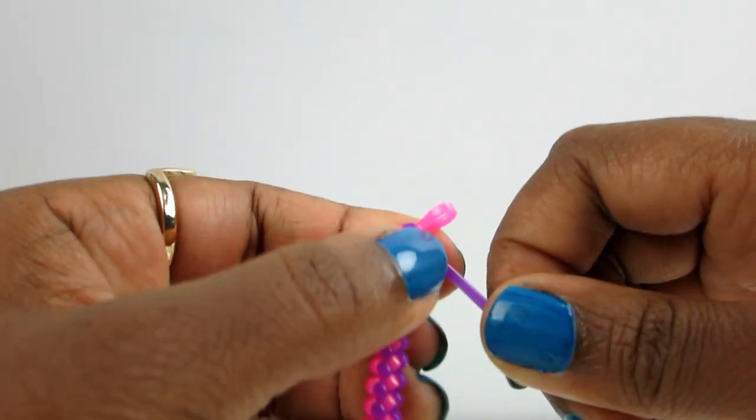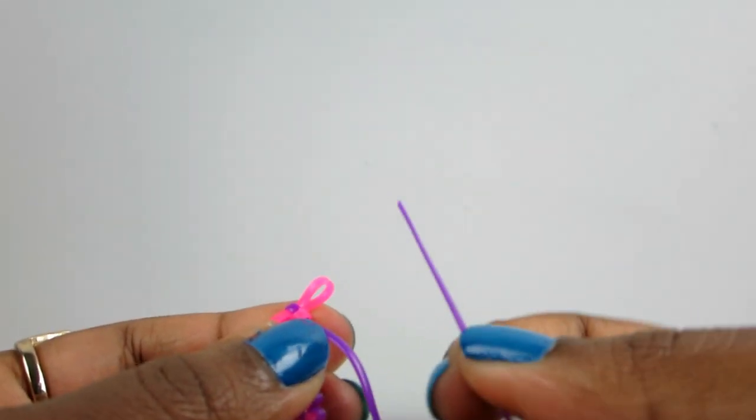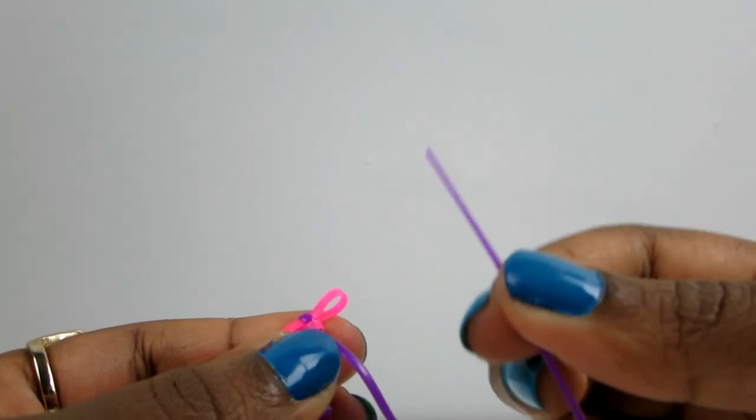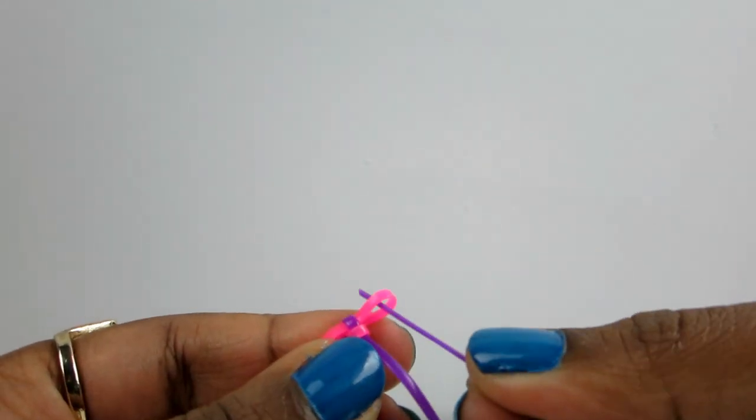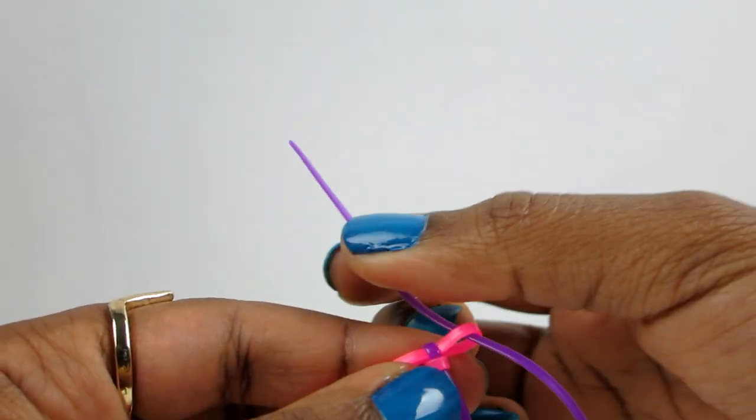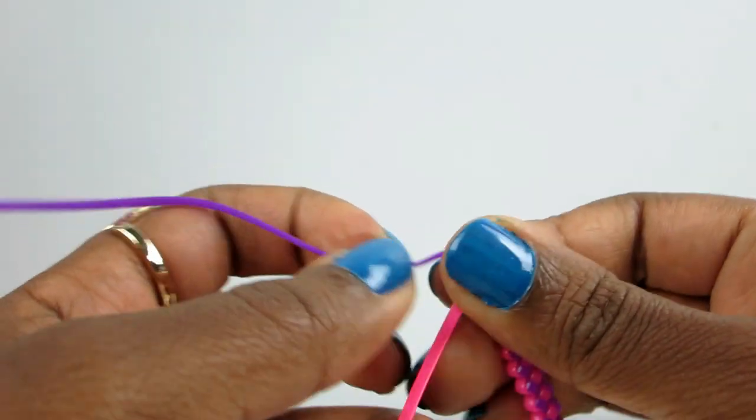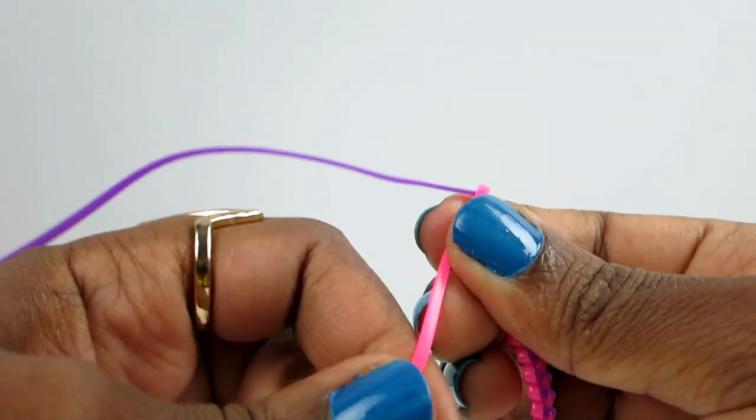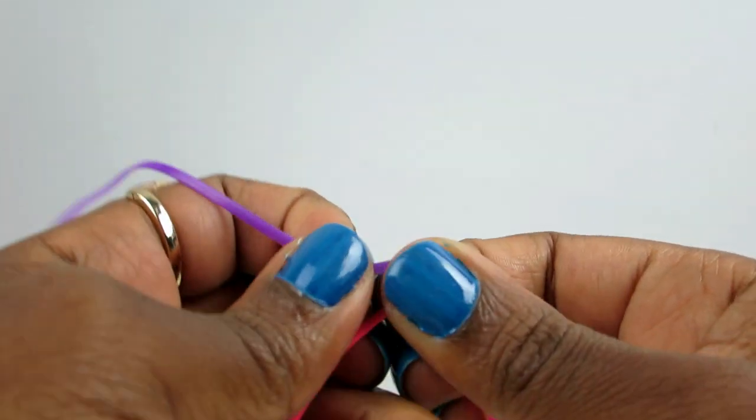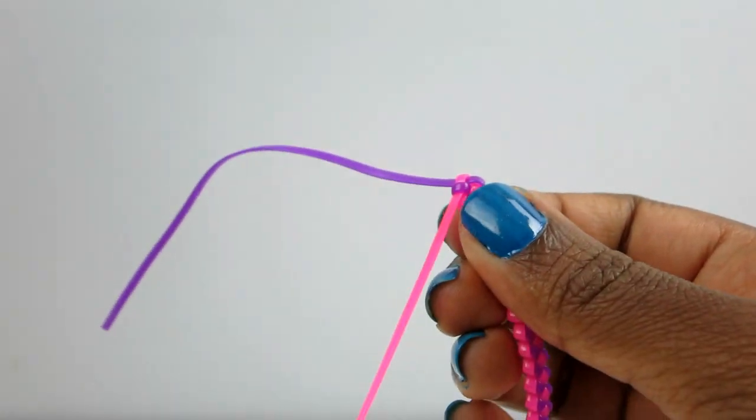So anyway, so now that we're done, I'm just going to pull this last piece again. And now I've got the purple part free. I'm just going to thumb that through or put that through the pink like it's a needle. And I'm going to give the pink a pull down like I did before.